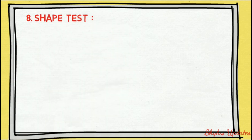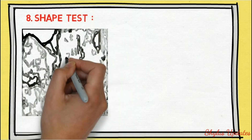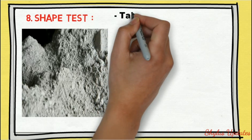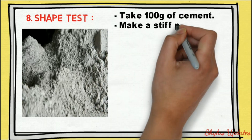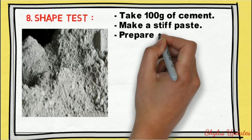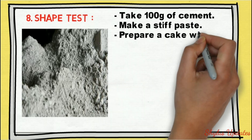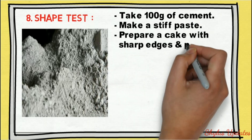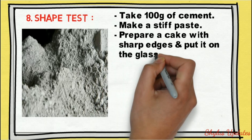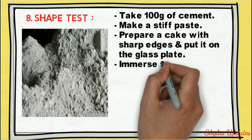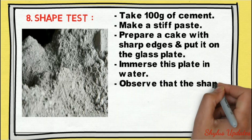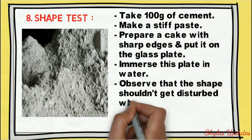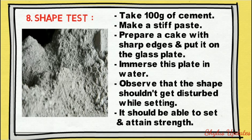Shape test: take 100 grams of cement and make a stiff paste. Prepare a cake with short edges and put it on a glass plate. Immerse this plate in water and observe that the shape should not get disturbed while setting — it should be able to set and attain strength.